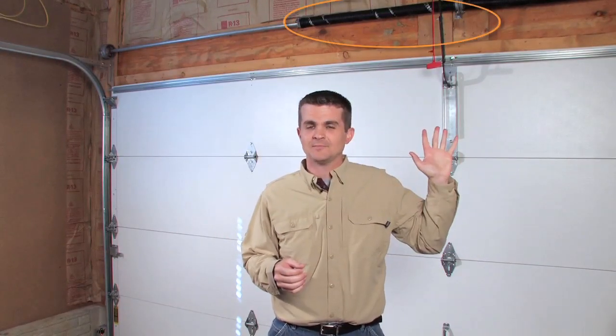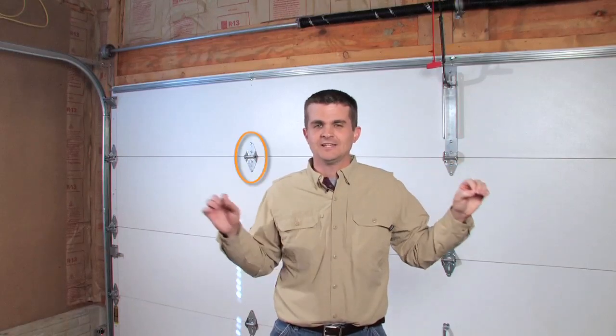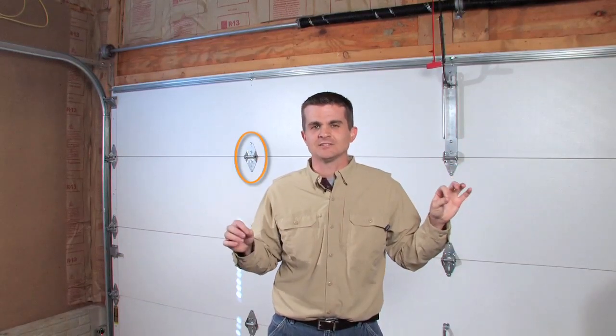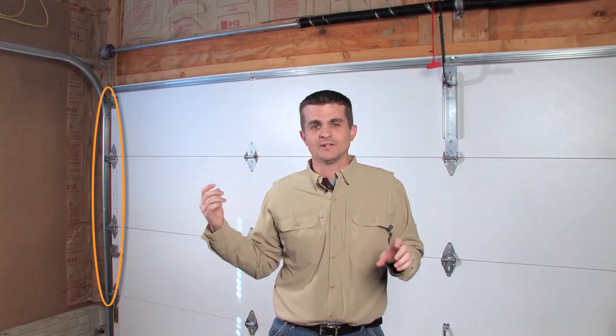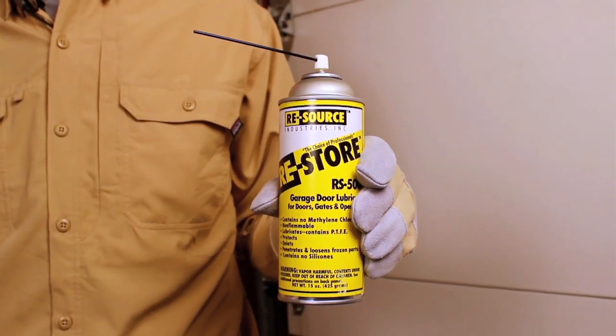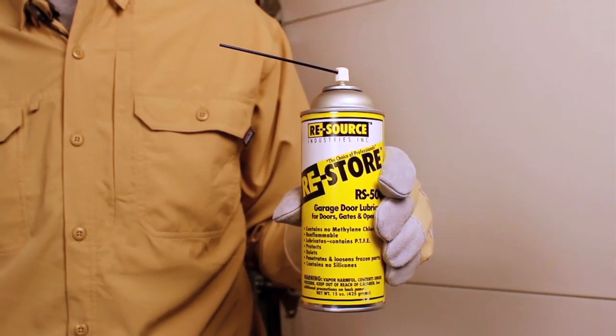They are the springs above the garage door, the hinges themselves between the sections, and then also the roller areas. What you want to use is garage door lubricant. Never use a penetrating oil.